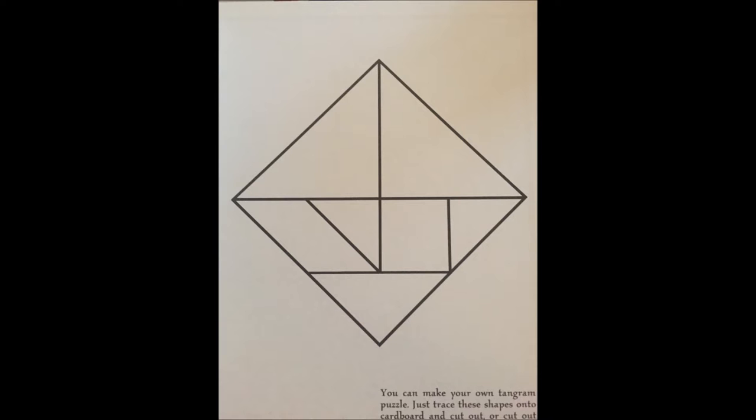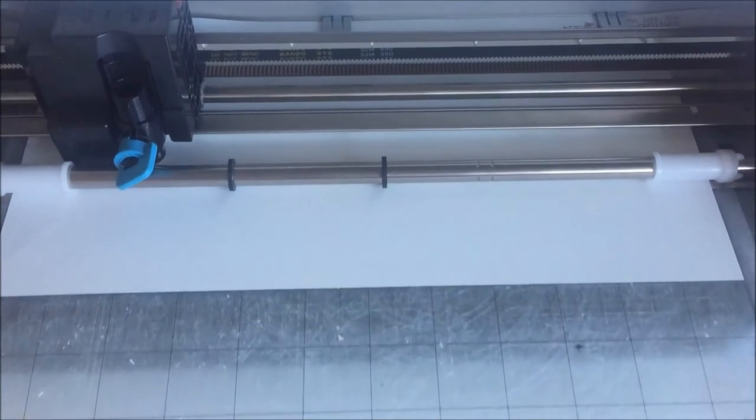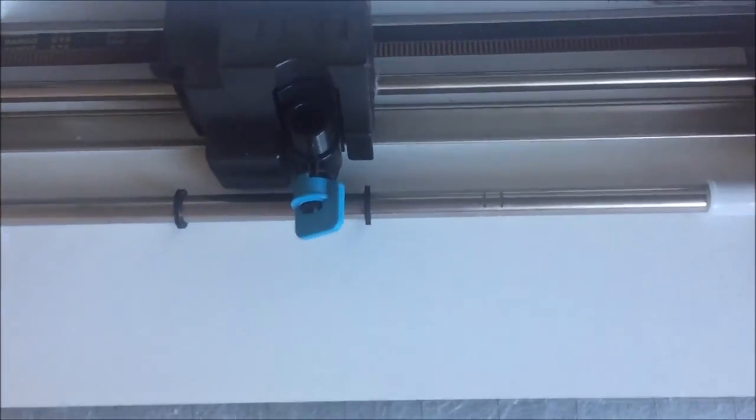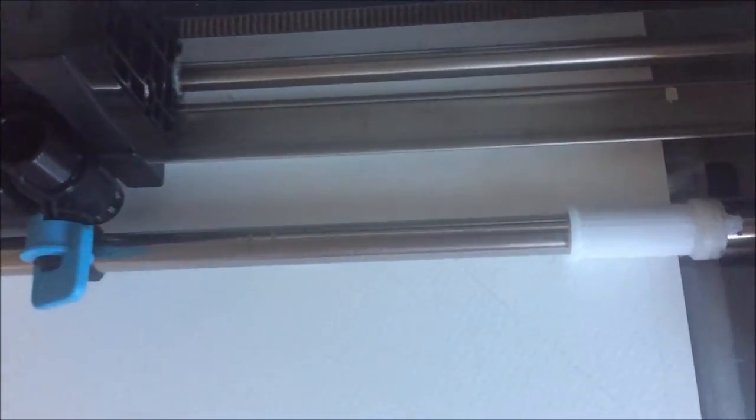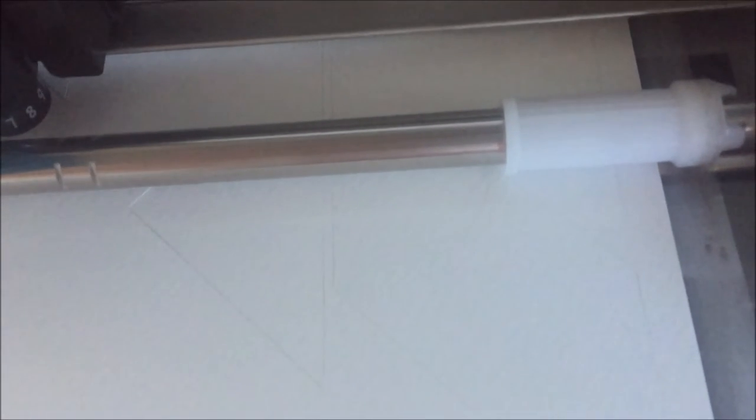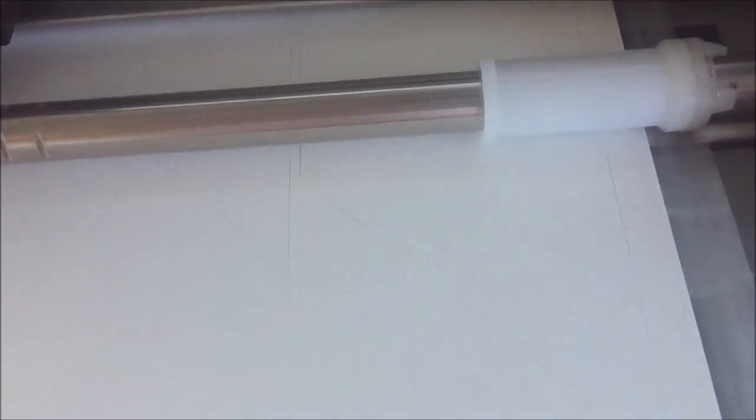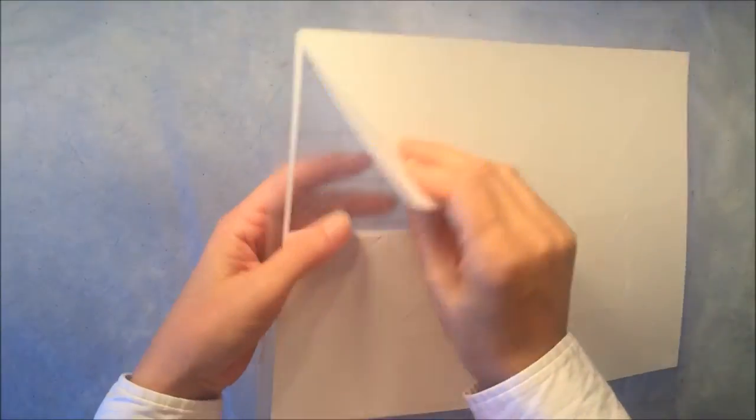I took a picture of the shape, and then I imported it into my Silhouette Cameo program, and I traced it, and then I sent it to the cutter. It's cutting out those shapes, and I made two sets, one for my fourth grader and one for my eighth grader.